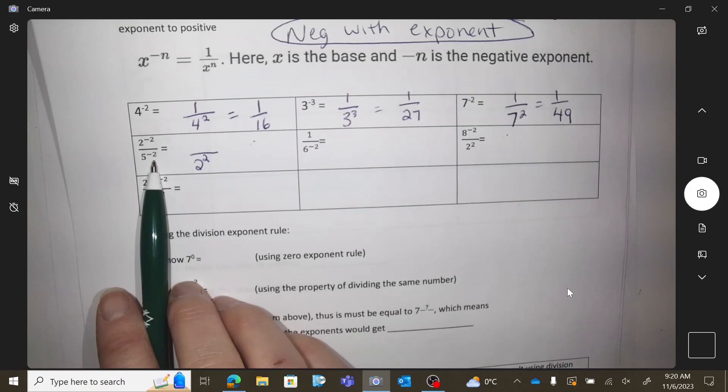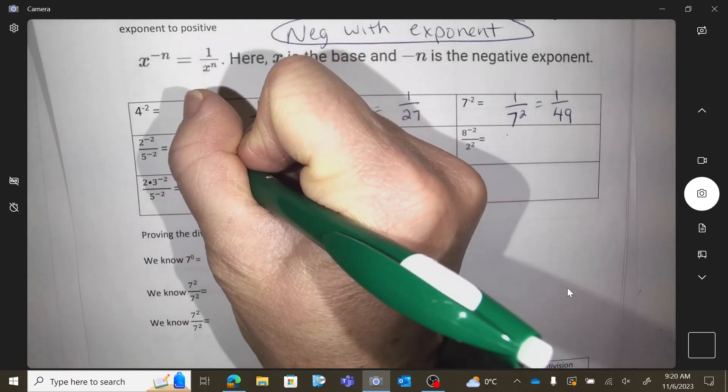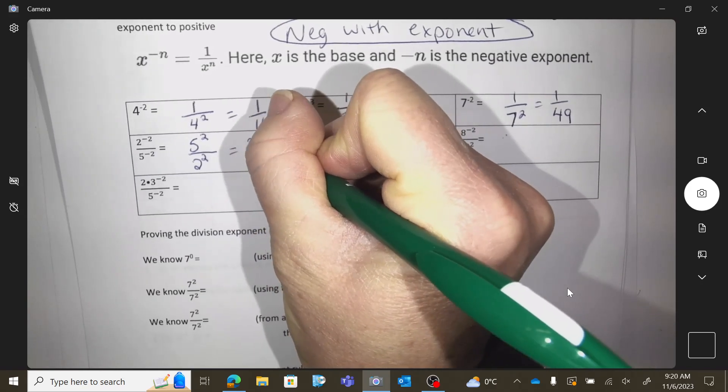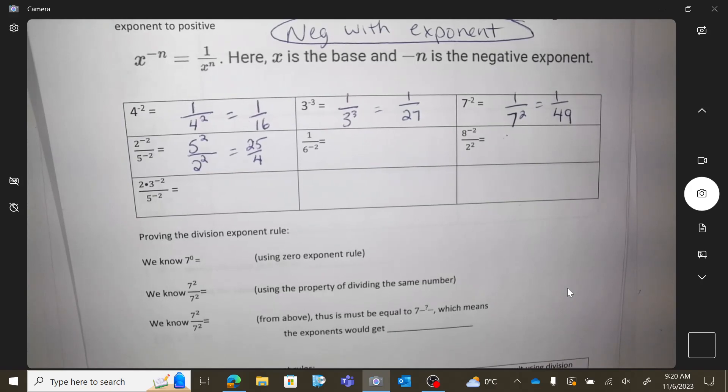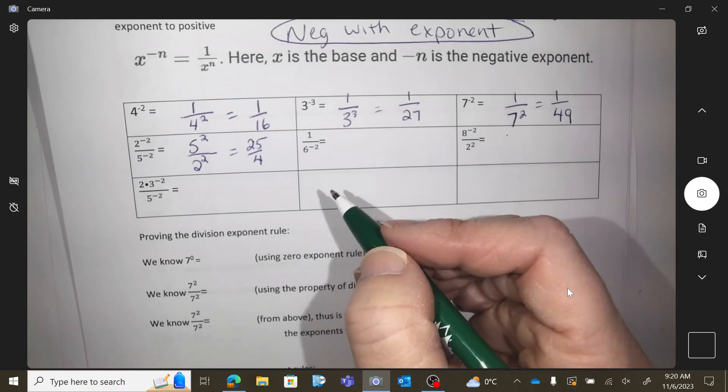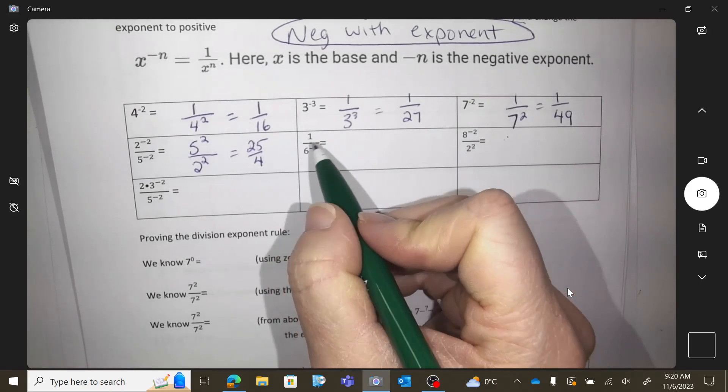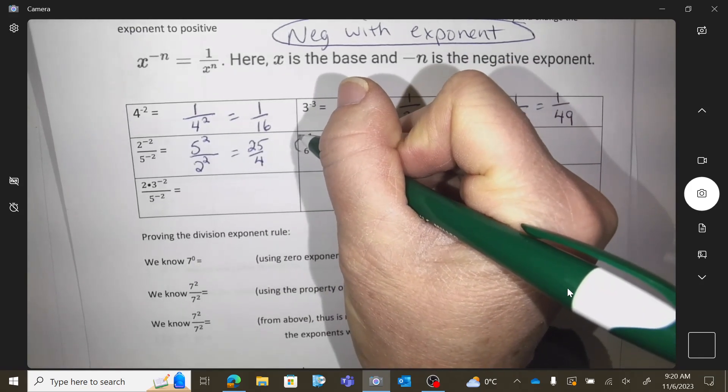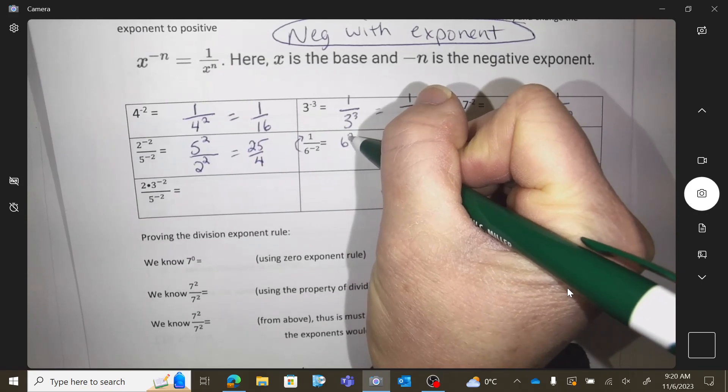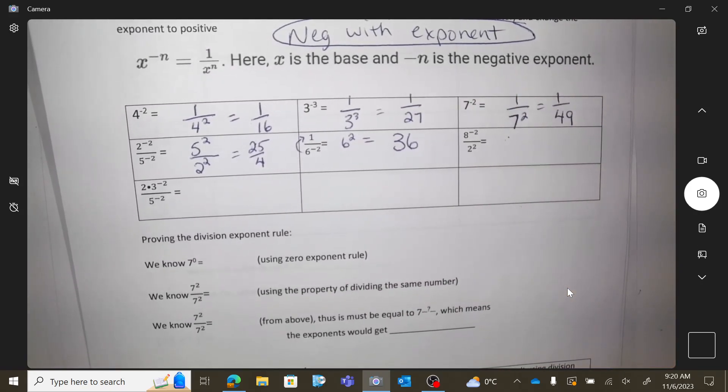5 to a negative 2, that has a negative exponent, so it's going to have to move. So if it's on the bottom, where should I move it? To the top. Okay, so this one has a negative exponent, so it's going to have to move. So if you move it, it will go to the top, and just become 36.